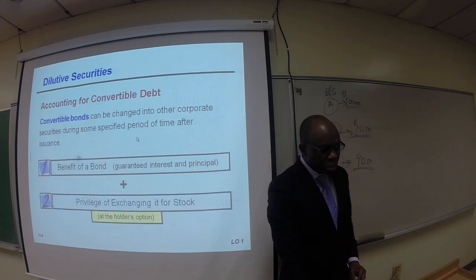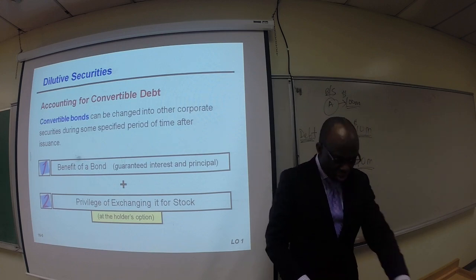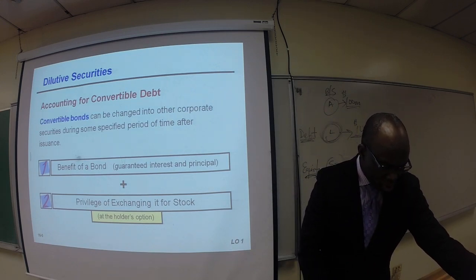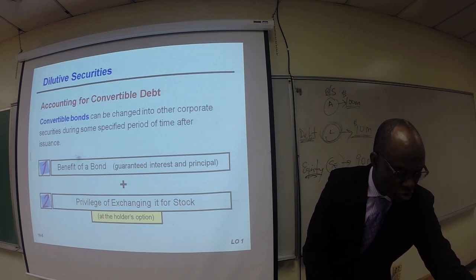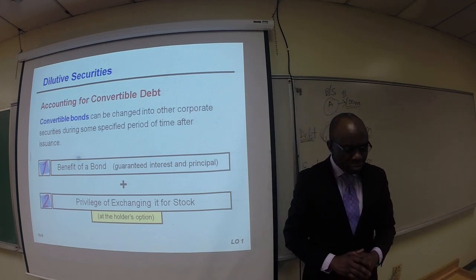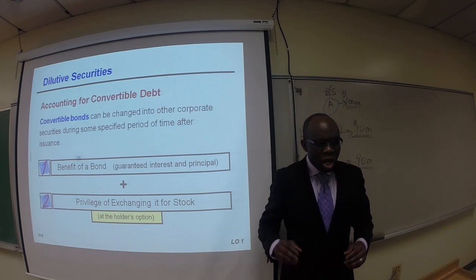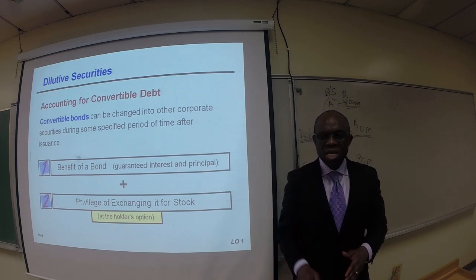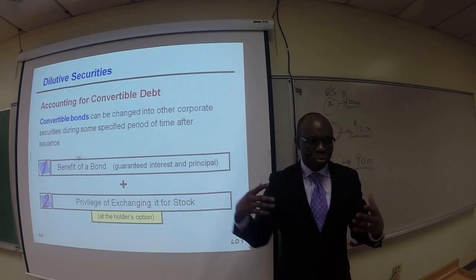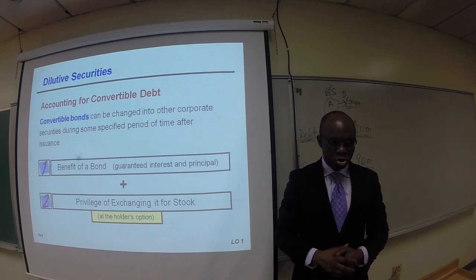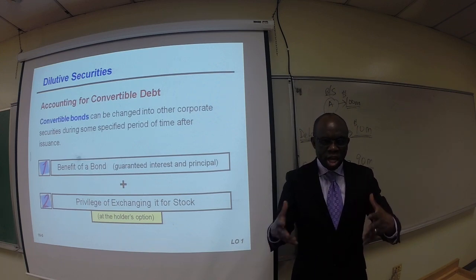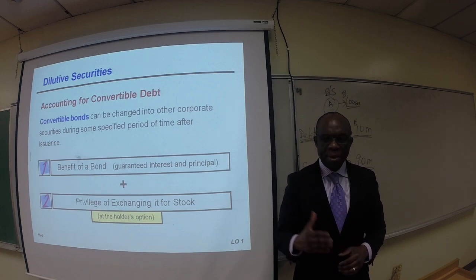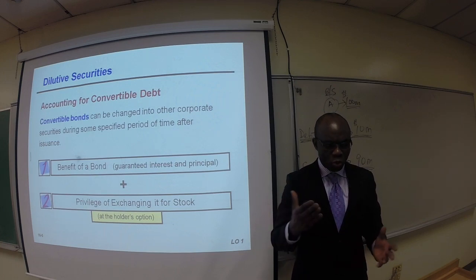Let's talk about the accounting for convertible debt. An example of convertible debt is convertible bonds, which can be changed to other corporate securities during some specified period of time after issuance.